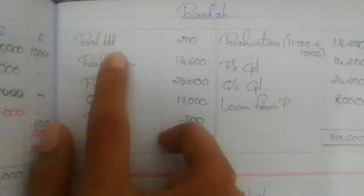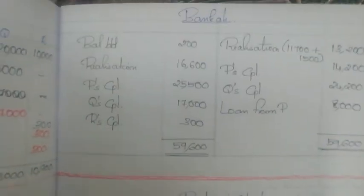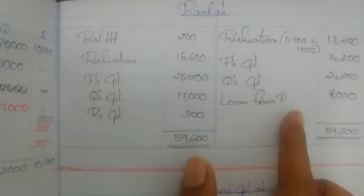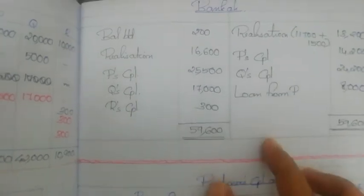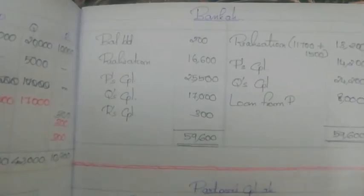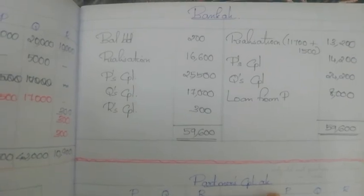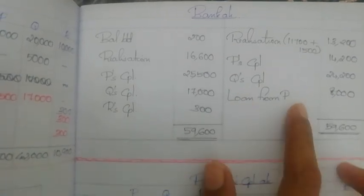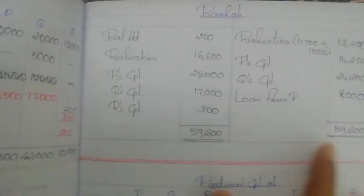The bank account is then balanced. The realization account is settled. If a partner has a loan — such as a loan from P — the journal entry is: loan from P account debit to bank account. The credit side of the loan account is cleared through the bank account.